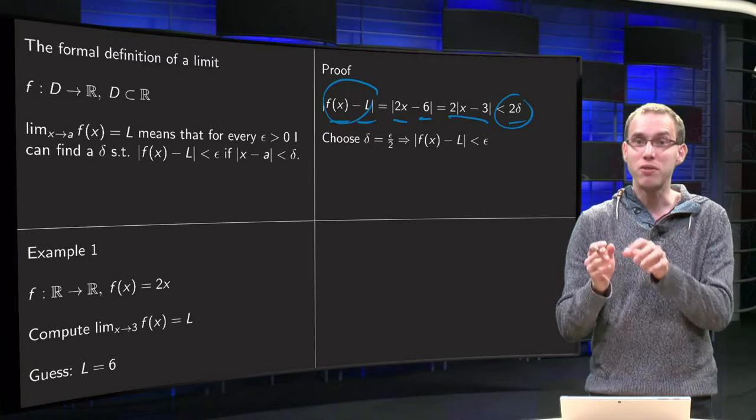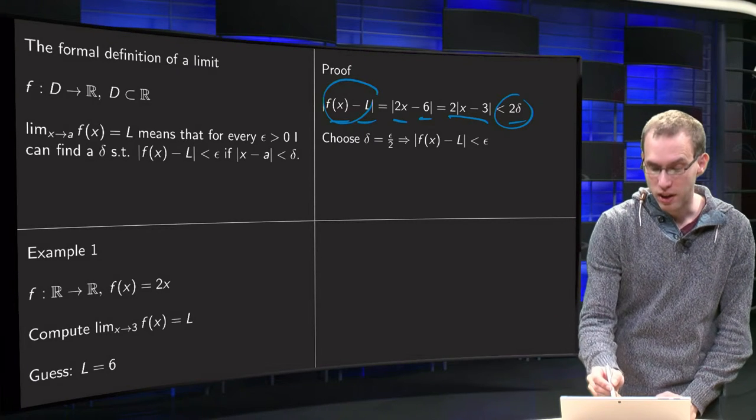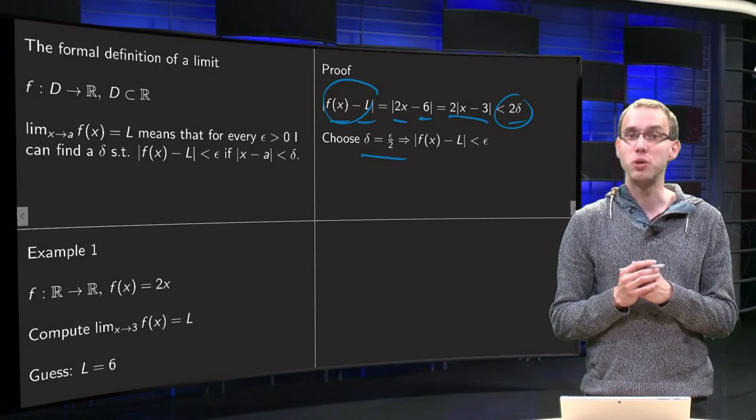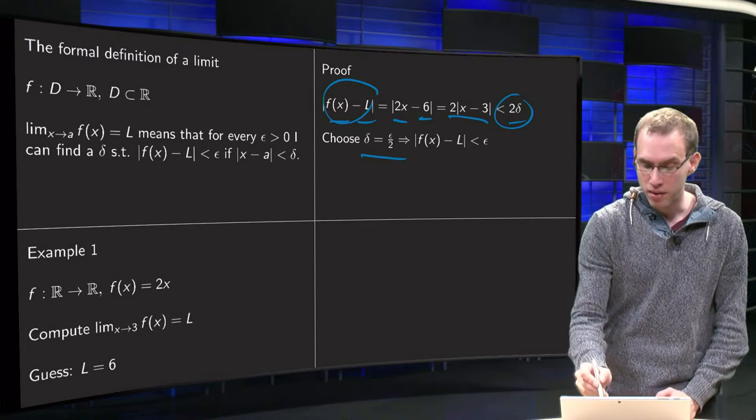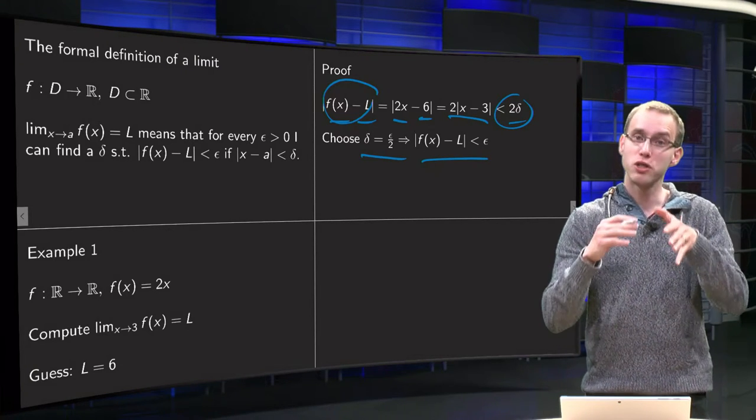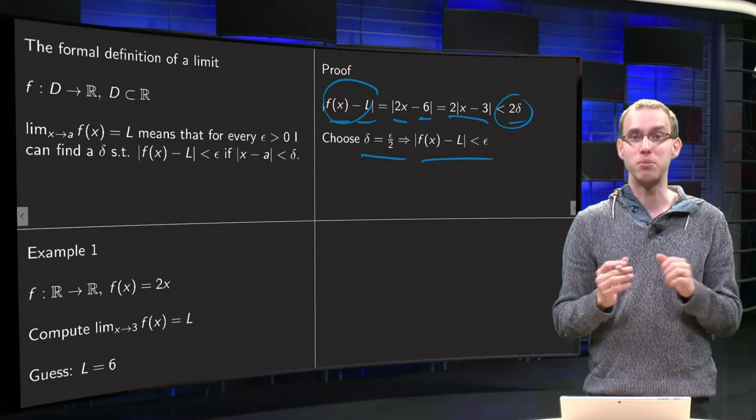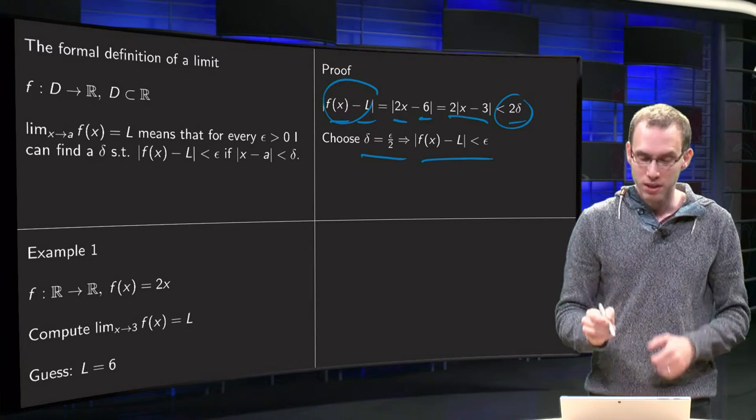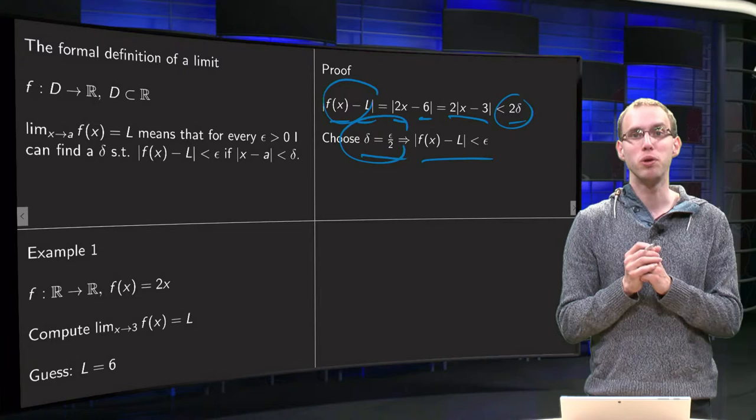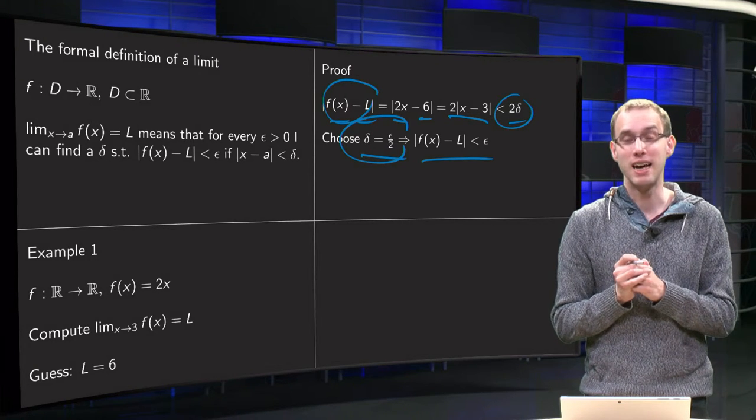Well, you have to choose 2 delta equals epsilon or choose delta equals epsilon over 2. So then we have that |f(x) - L| is smaller than epsilon for any epsilon. So this rule over here dictates how small you should choose your delta.